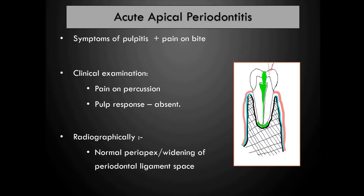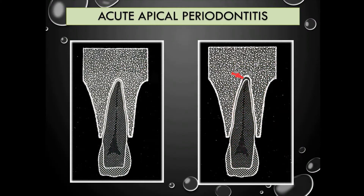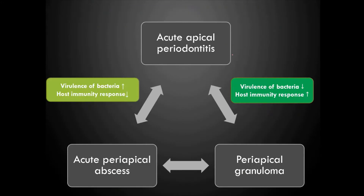Radiographically, there may be a normal peri apex or widening of the periodontal ligament space, but the lamina dura is intact in acute apical periodontitis. In the initial stages, radiographic changes may not be evident even though clinically the patient may have symptoms. It may show a normal peri apex with intact lamina dura, or intact lamina dura with a widened PDL space at the peri apex.